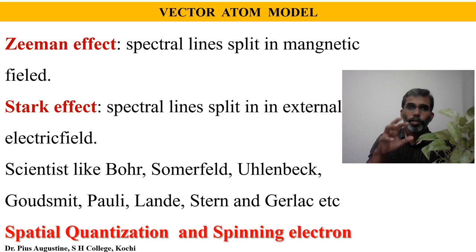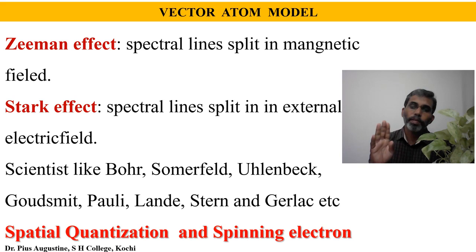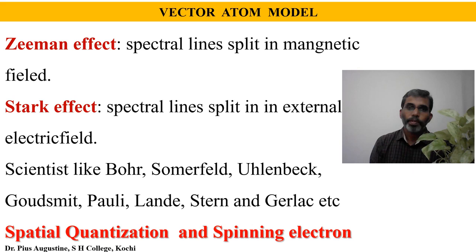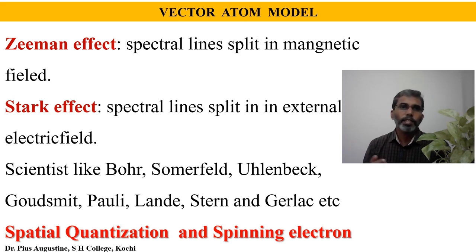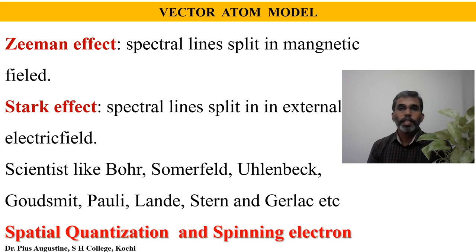For discussions to explain Zeeman effect, Stark effect, etc., the existing Sommerfeld model or Bohr atom model was not sufficient. This new model with these two ideas — spatial quantization and spinning electron, that is, electron spin about its own axis — was required in order to account for the spectral splitting in electrical and magnetic fields. I suggest you please download the photographs of those scientists greatly involved in the formulation of this vector atom model, read a little about them, and if possible prepare a write-up along with their photograph and biography.